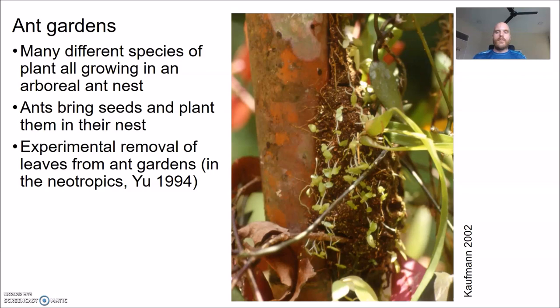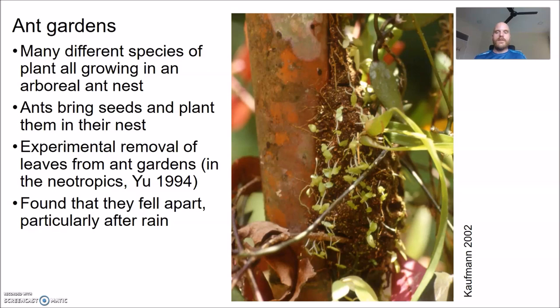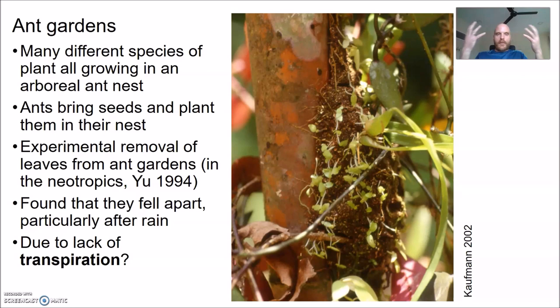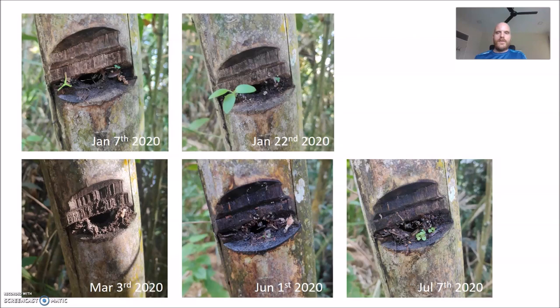There was a really nice experiment on this by Doug Yu — in South America, not Borneo, but worth mentioning. He trimmed all the leaves from plants in the ant garden and found that these ant gardens survived for much less time afterwards, particularly after heavy rain. He speculated this was because the plants draw water out of the wet ant garden through transpiration — probably good for the ant colony because it means drying out more quickly after rain and being less likely to fall in a soggy mess.